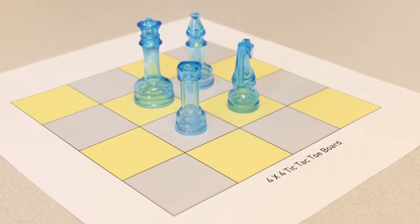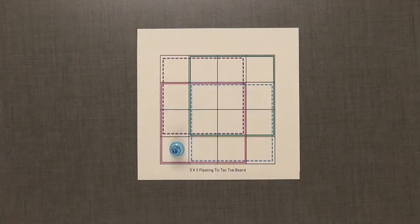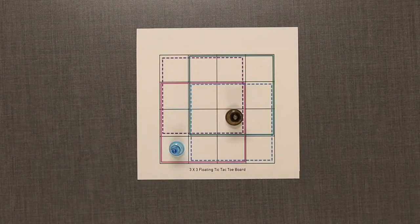The third variation is the floating 3x3 game. Using the 3x3 floating tic-tac-toe board, follow the same rules as in the 3x3 game. Your 3x3 board now floats within the 4x4 board.